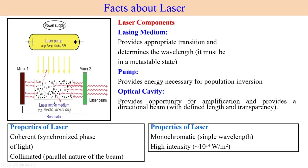Looking at how laser light is created: there is a power supply and a laser pump — which can be a lamp, diode pump, or radio frequency source — that excites the laser active medium. From the lasing medium, coherent synchronized-phase light is emitted. Using mirrors within the chamber, a collimated parallel beam comes out from the system.